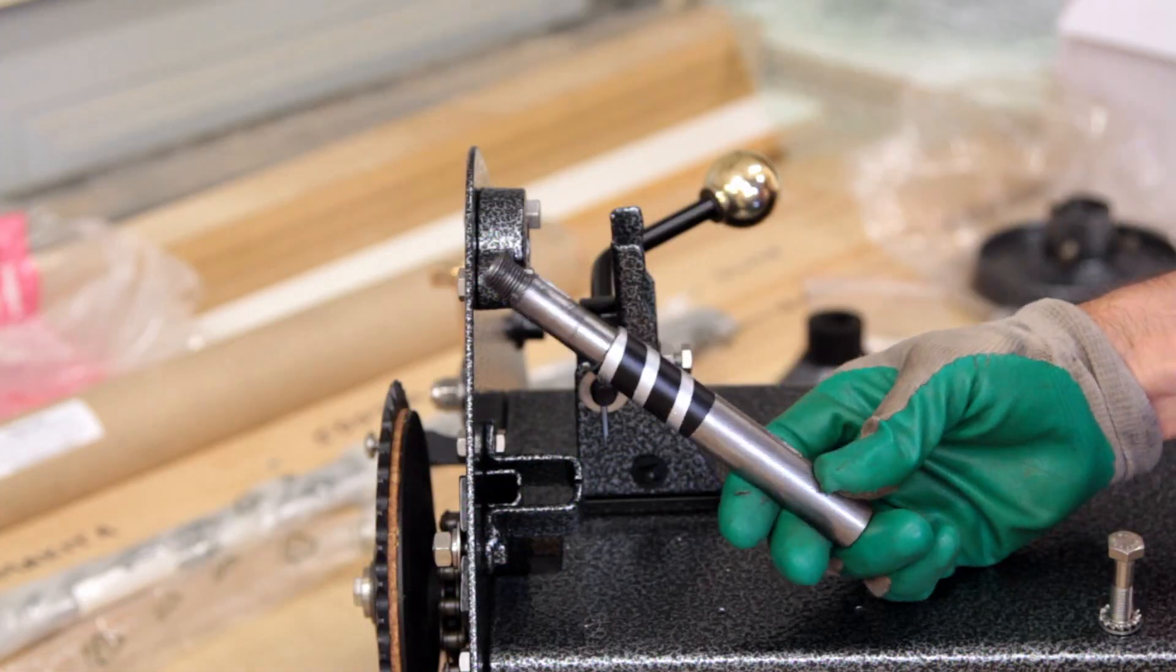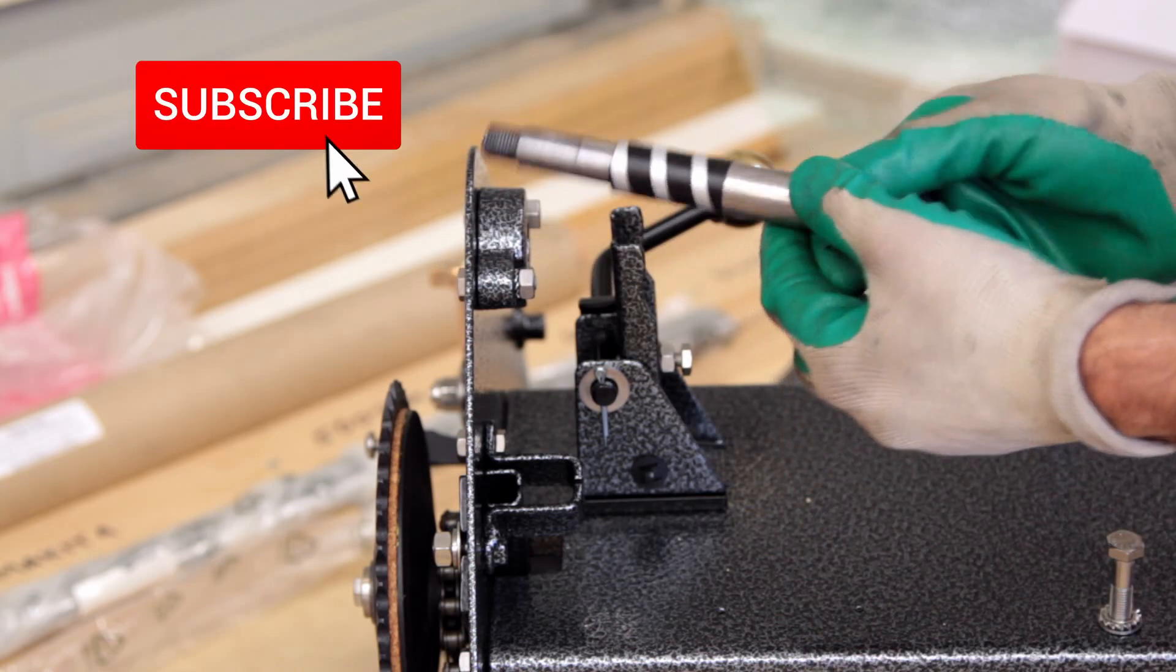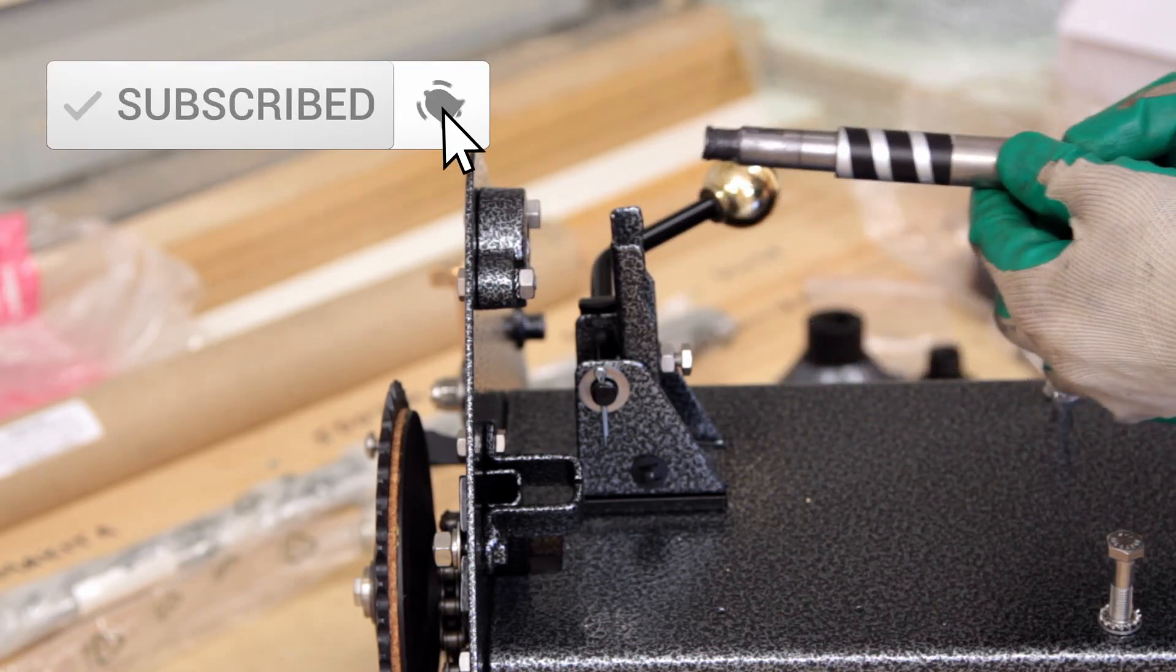So I've got my PTO shaft here and I've got some swirly paint on it. Do whatever you like with it, but this is what I've done with mine.